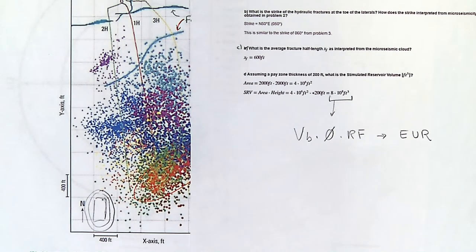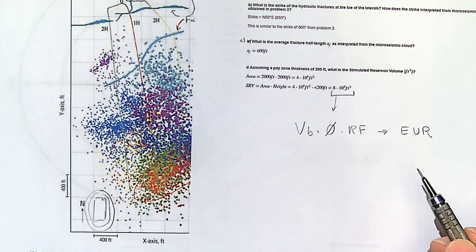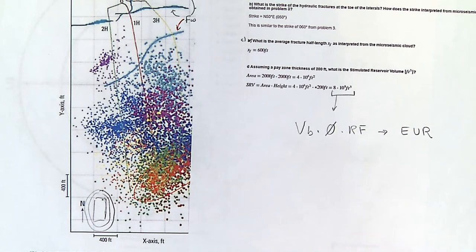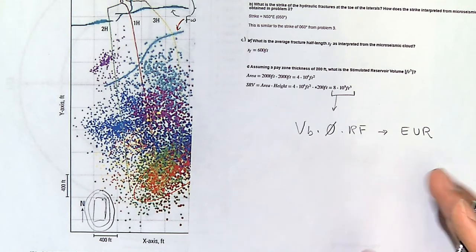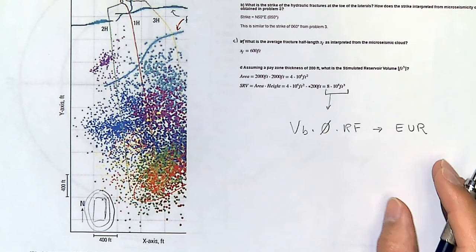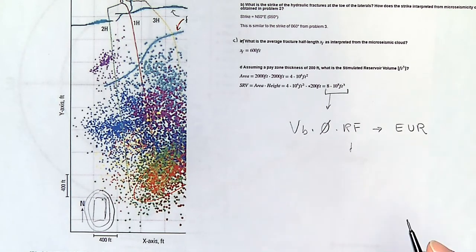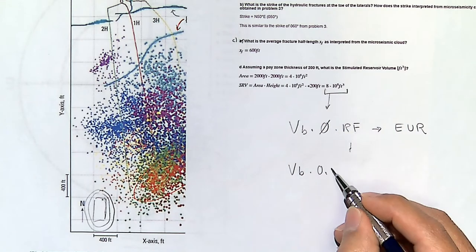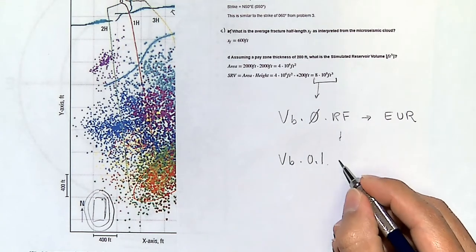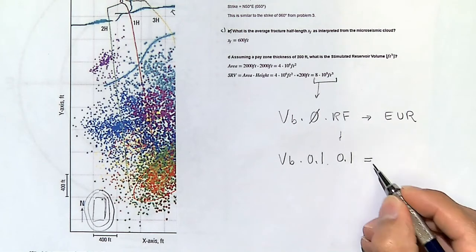If we multiply this bulk volume times porosity times recovery factor, we get the EUR. What's the recovery factor for shales? For gas it's usually higher — 30 to 60 percent — but for oil it's usually small: five to ten percent at most. Let's use porosity of 0.1 and recovery factor of 0.1.